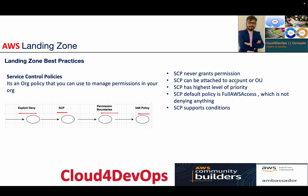In terms of what SCP is doing, it never grants permission. These are the facts about SCPs: it can be attached to your account or OU level, it has the highest level of priority, and by default whenever you add a member account to the organization, you get full AWS access, which is not denying anything. It supports conditions, so based upon your condition you can allow or deny something — like creation of VPC resources. You can explicitly deny the creation of VPC resources, controlled from the organization unit and applied from the master or payer or root account. You get a centralized system to do everything.